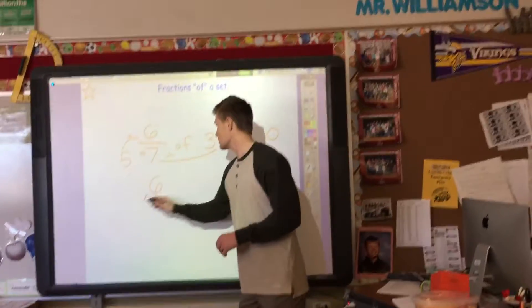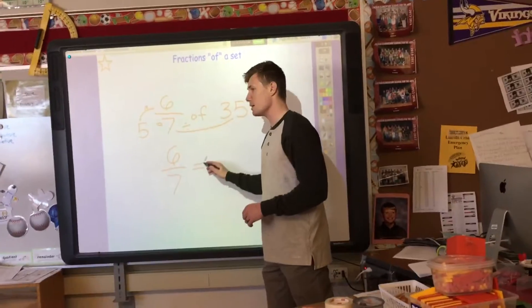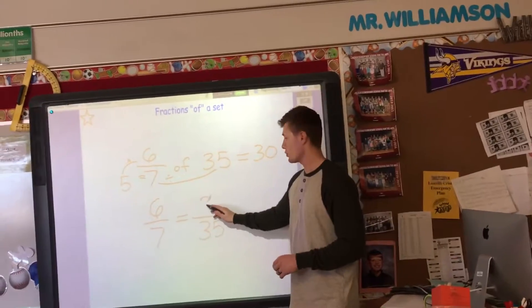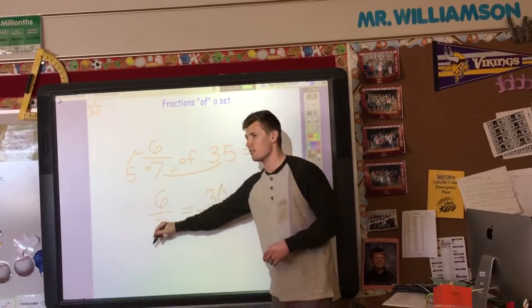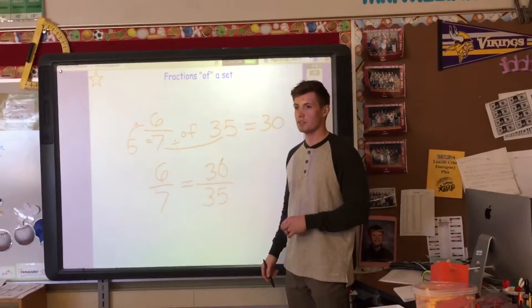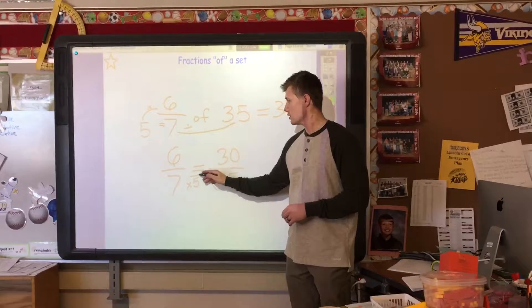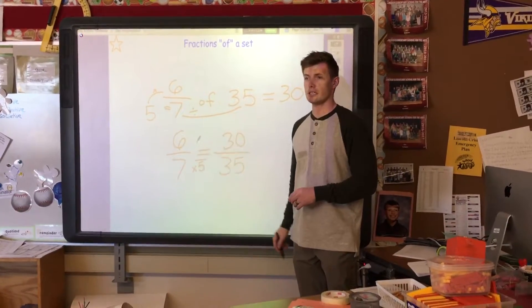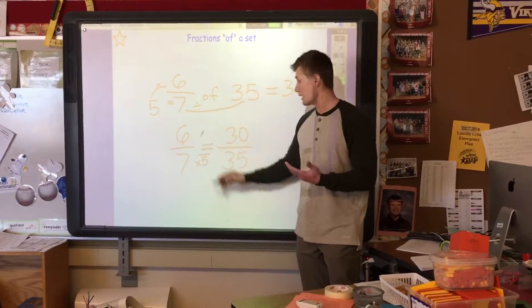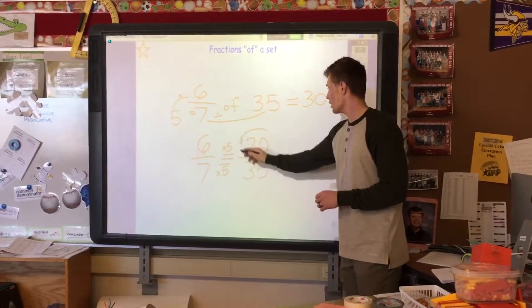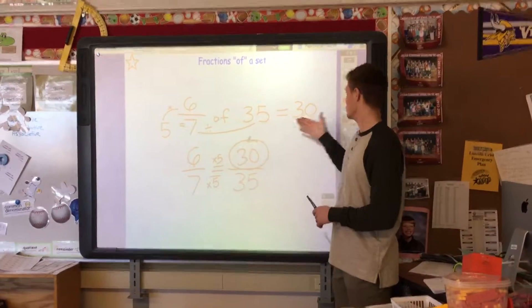Another way, six-sevenths is the same as how many out of thirty-five? Thirty. Because how did seven change to thirty-five? Five. Times five. So what did we do to the six? Times five. These are equivalent fractions, and this is my answer.